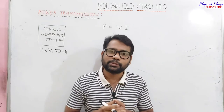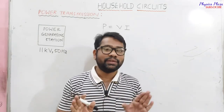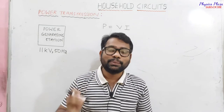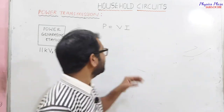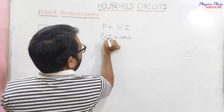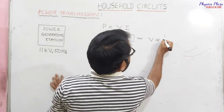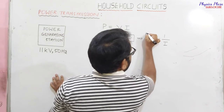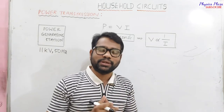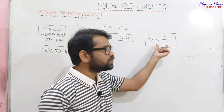During power transmission, input power always equals output power — power must not get wasted, it remains constant. Since V × I = constant, V is inversely proportional to I. Whenever power remains constant, more voltage means less current, and less voltage means more current. So we have two methods to transmit power.